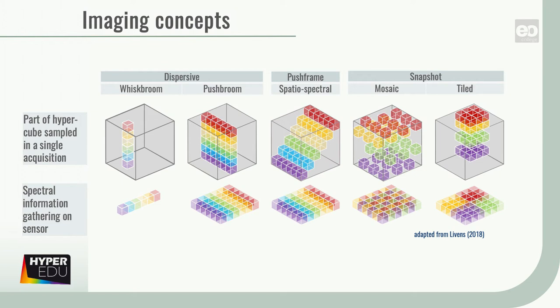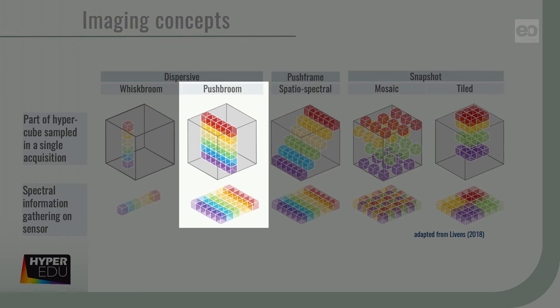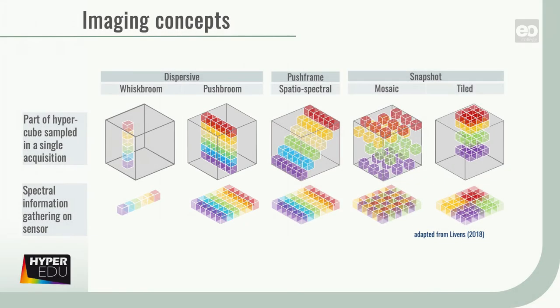Regarding imaging spectroscopy, push broom or spatial scanning sensors are most common in airborne as well as space-borne systems, whereas VNIR and SWIR detectors are often separate instruments.